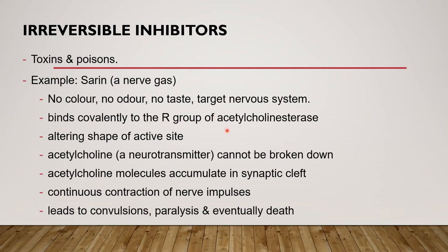Sarin binds covalently to the R group of acetylcholinesterase, and this nerve gas alters the shape of the enzyme's active site. Acetylcholinesterase is involved in the termination of impulse transmission by rapid hydrolysis of the neurotransmitter acetylcholine. When inhibited, acetylcholine cannot be broken down and it accumulates in the synaptic cleft. As a result, there will be continuous contraction of nerve impulses which leads to convulsions, paralysis, and eventually death. This nerve gas is very dangerous. Other examples of irreversible inhibitors include pesticides DDT and parathion, which inhibit key enzymes in the nervous system.